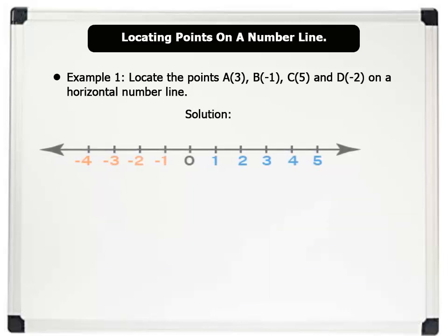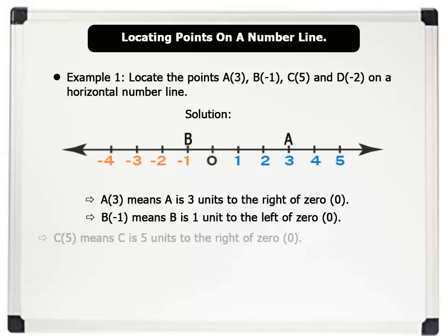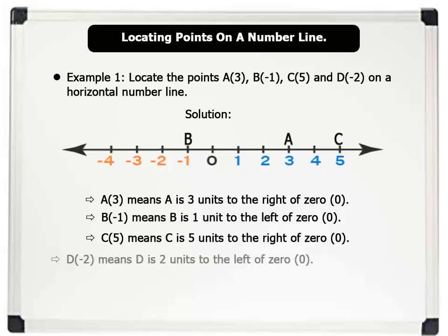First we position our horizontal number line as shown on the board. Now A3 means A is 3 units to the right of 0. B minus 1 means B is 1 unit to the left of 0. C5 means C is 5 units to the right of 0. And D minus 2 means D is 2 units to the left of 0. That's very good.